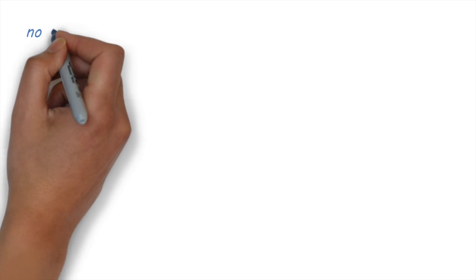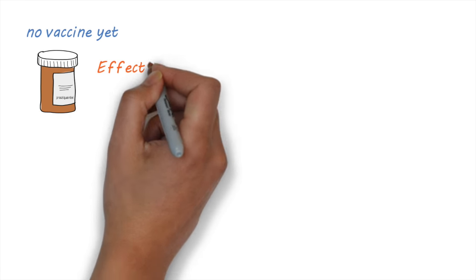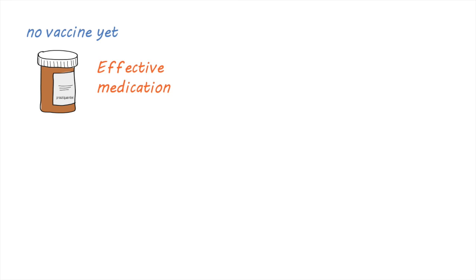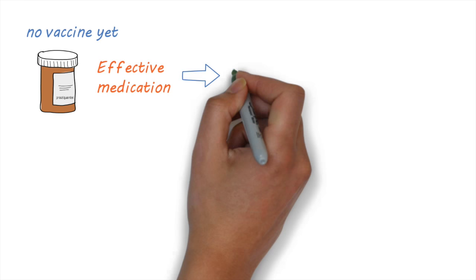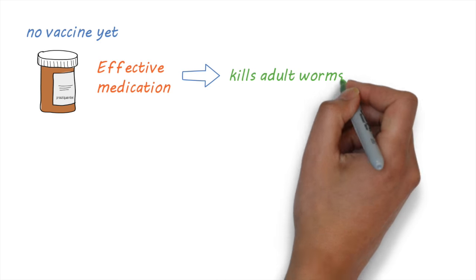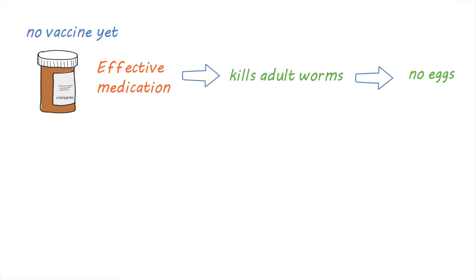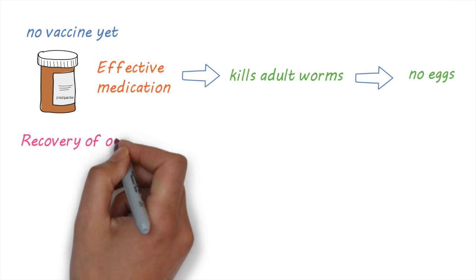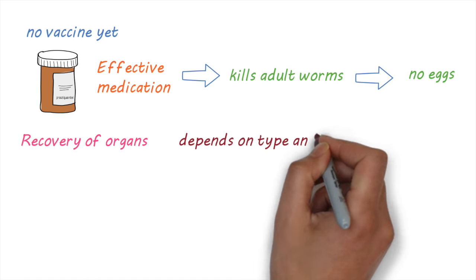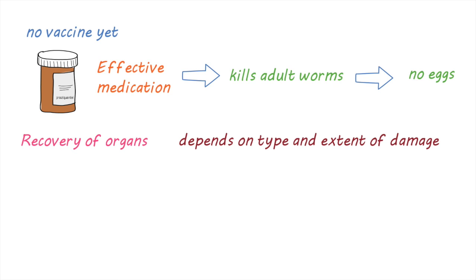There is no vaccine against schistosomiasis yet, but there is effective medication to treat the disease. These medications usually work by killing the adult worms, which means that eggs are no longer produced. Recovery of the affected organs depends on the type and extent of the damage that has already taken place.